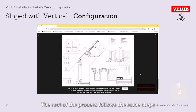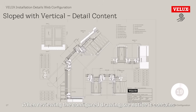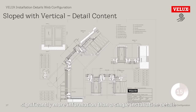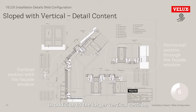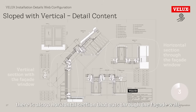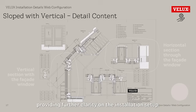The rest of the process follows the same steps as in the previous examples. When reviewing the configured drawing, we notice it contains significantly more information than a single installation detail. The size grid and drawing legend are denser, reflecting the complexity of the configuration. In addition to the larger vertical section, there is also a horizontal section that cuts through the facade wall, providing further clarity on the installation setup.